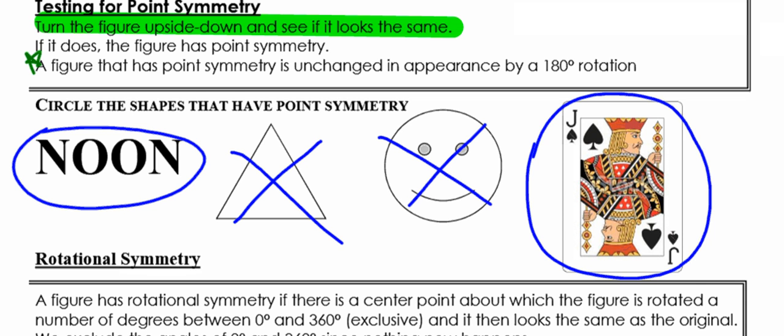When I flip my paper upside down, the two that I found that were exactly the same — unchanged in appearance — were the word "noon" and that jack of spades. They are the same upside down as they were right side up. So that's the whole idea or notion of point symmetry.